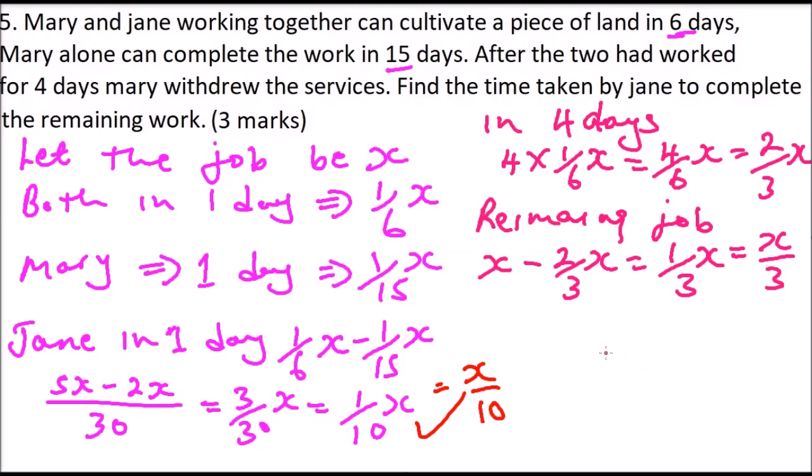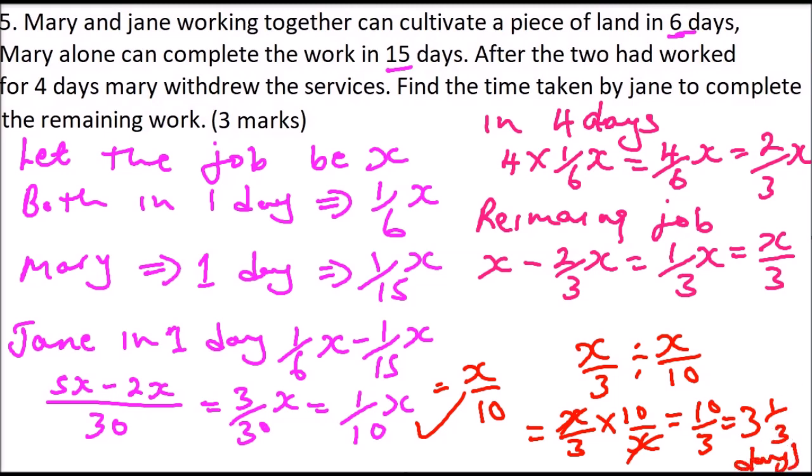So you divide the remaining job, x over 3, by what Jane can do in one day, which is x over 10. And this will give you x over 3 multiplied by 10 over x. So x disappears, and this will give you 10 over 3, which is 3 and a third days. So Jane will take 3 and a third days to complete the remaining work.